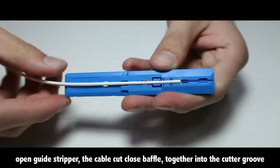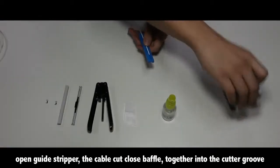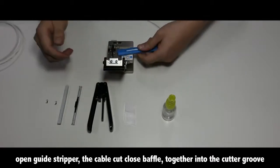Open the guide stripper. Cut the cable close to the baffle and place it together into the cutter groove.